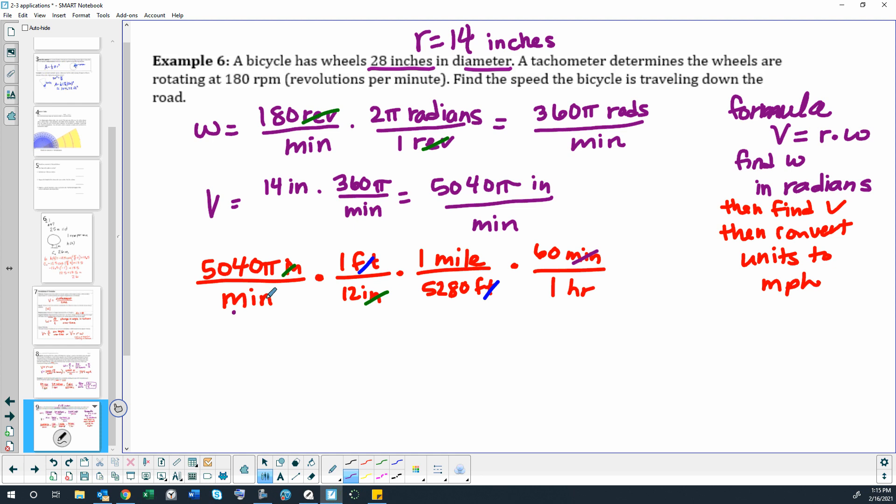So that minutes will cancel and we will be left with miles per hour. Okay, so we're going to go 5040 times π times 60, and we're going to divide by 12 and also divide by 5280.